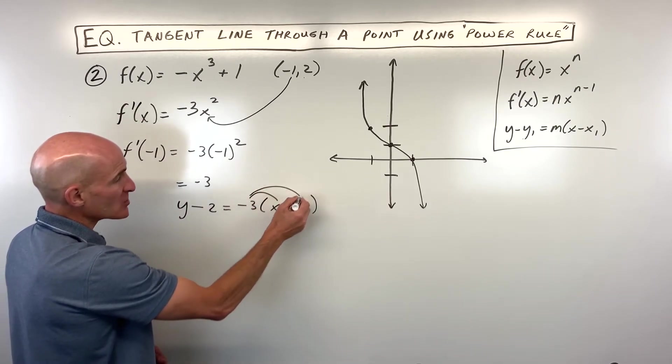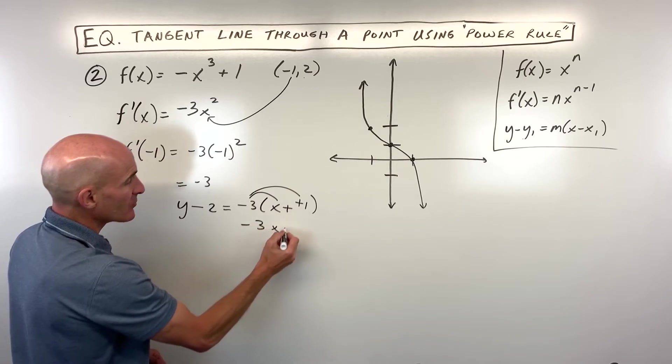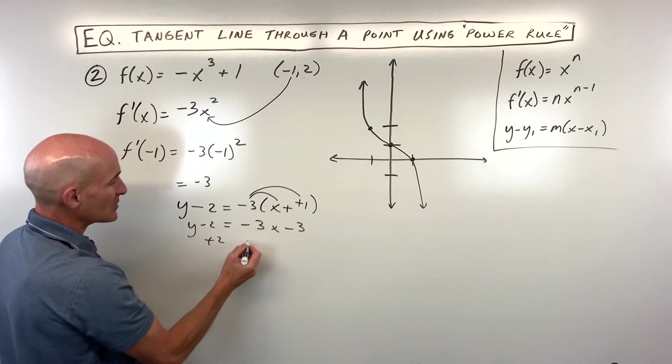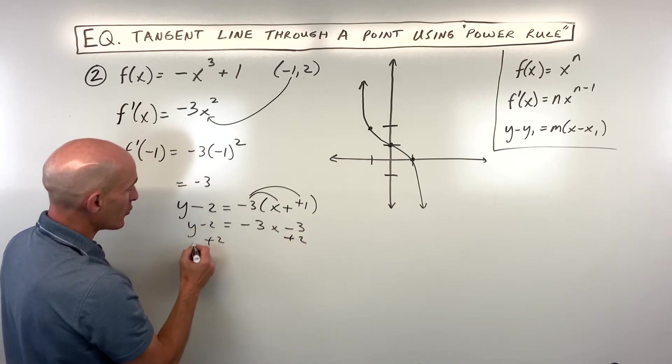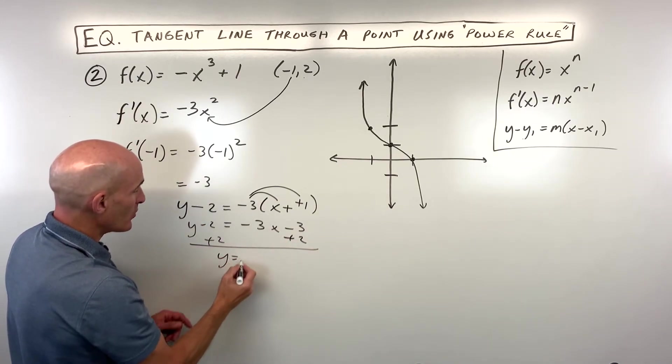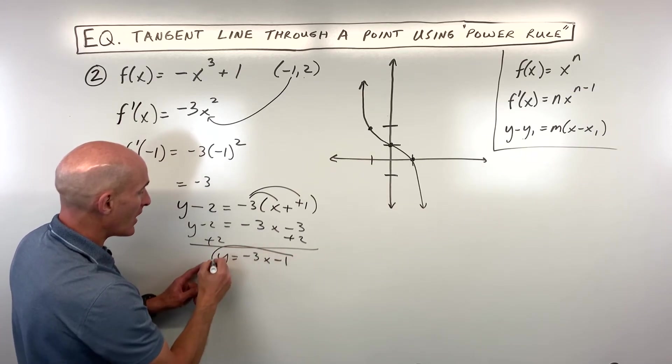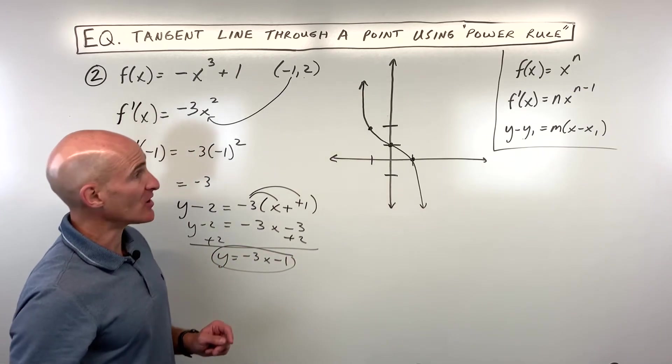We're going to take this a step further by distributing. This comes out to negative 3x minus 3. Then we're going to get y by itself by adding 2 to both sides. Now it's in slope-intercept form: y equals negative 3x minus 1 is the equation of our tangent line.